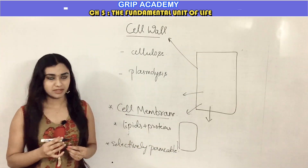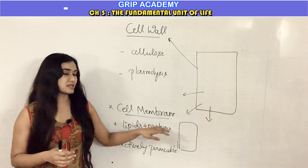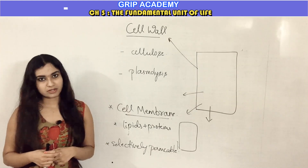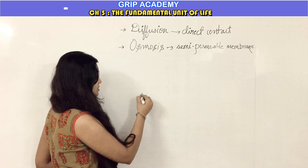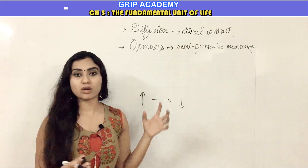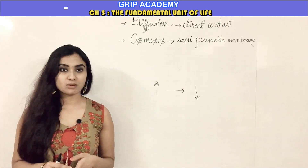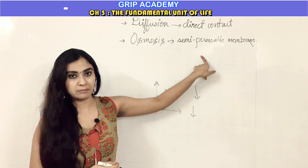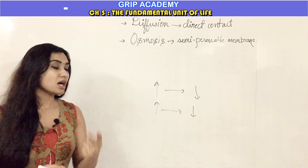The cell membrane can also be called a semi-permeable membrane. Substances move in and out of the cell through two main phenomena: diffusion and osmosis. Diffusion is the movement of particles or substances from a region of higher concentration to a region of lower concentration. This happens when two substances come into direct contact with each other. Osmosis is again the movement of particles from a region of higher concentration to lower concentration, but through a semi-permeable membrane — that is the key difference between diffusion and osmosis.